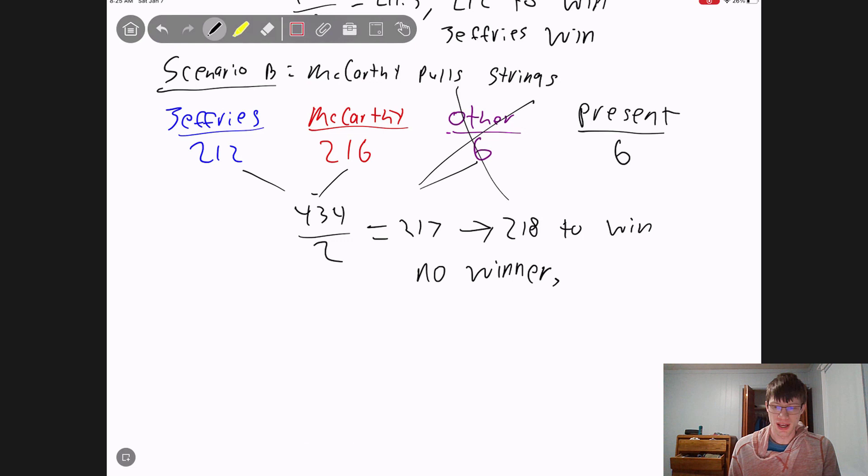Them voting present was really kind of like voting for him because they could have just stopped him by voting for someone else. But they did not.